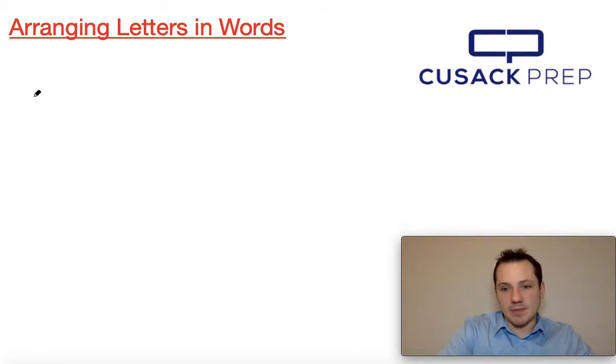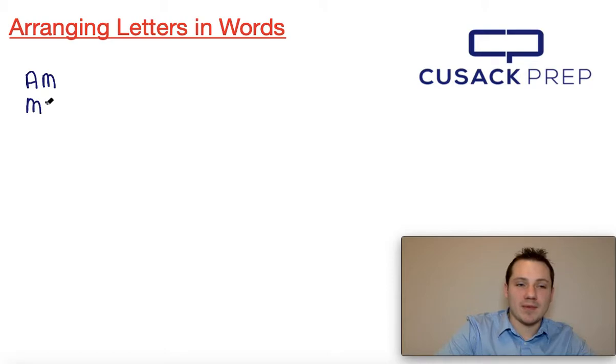So let's say I had a very simple word. Let's say I had a two-letter word. Maybe I had the word AM. And we wanted to ask ourselves how many ways we could arrange these two letters. Well, this is pretty easy, right? We can either arrange it the way that it is, or we can arrange it as MA. And so we can see that there are two possible ways that those two words can be arranged.